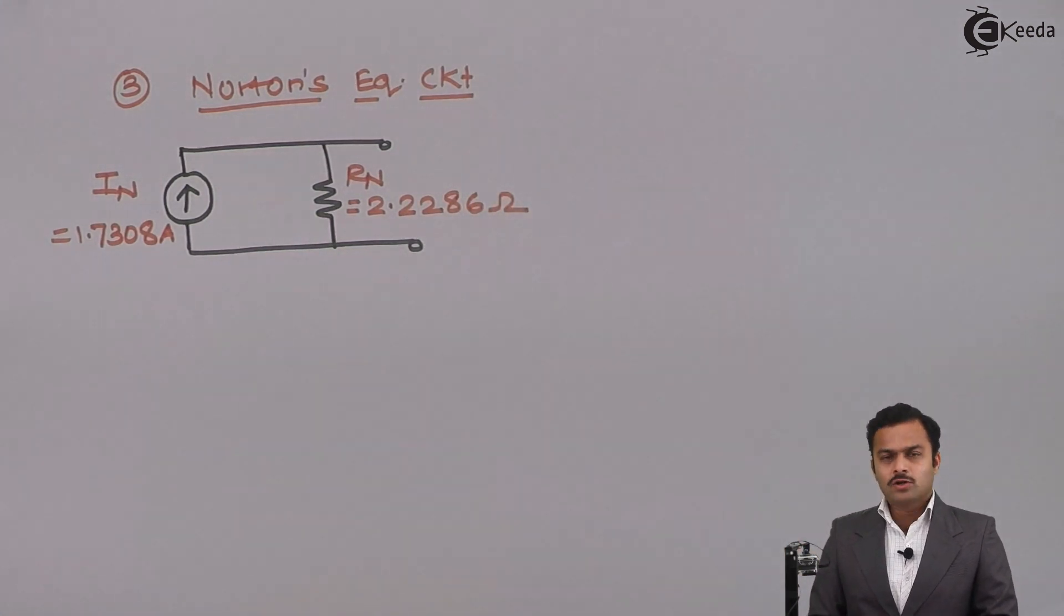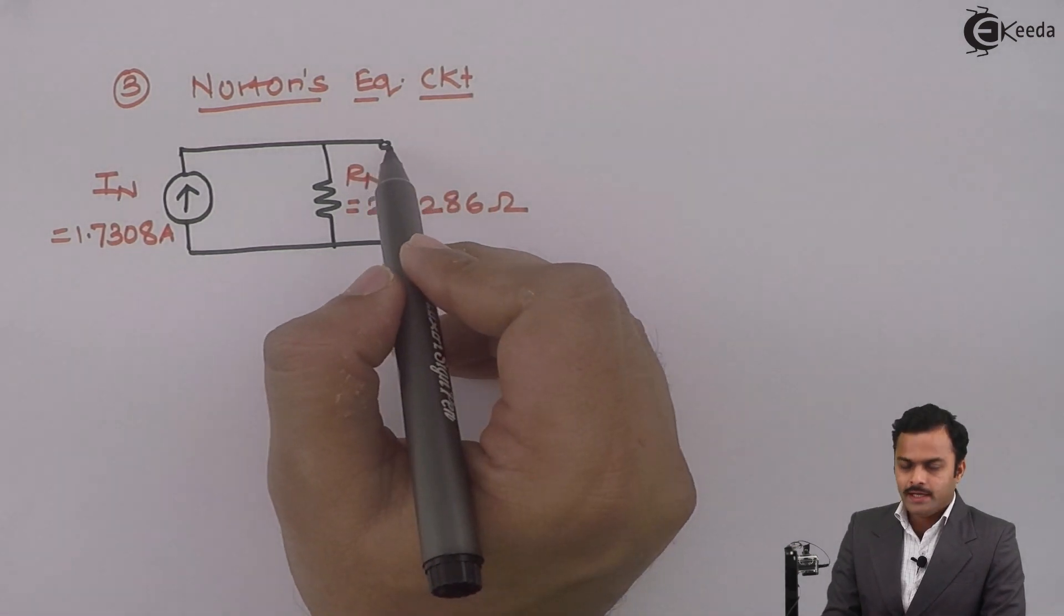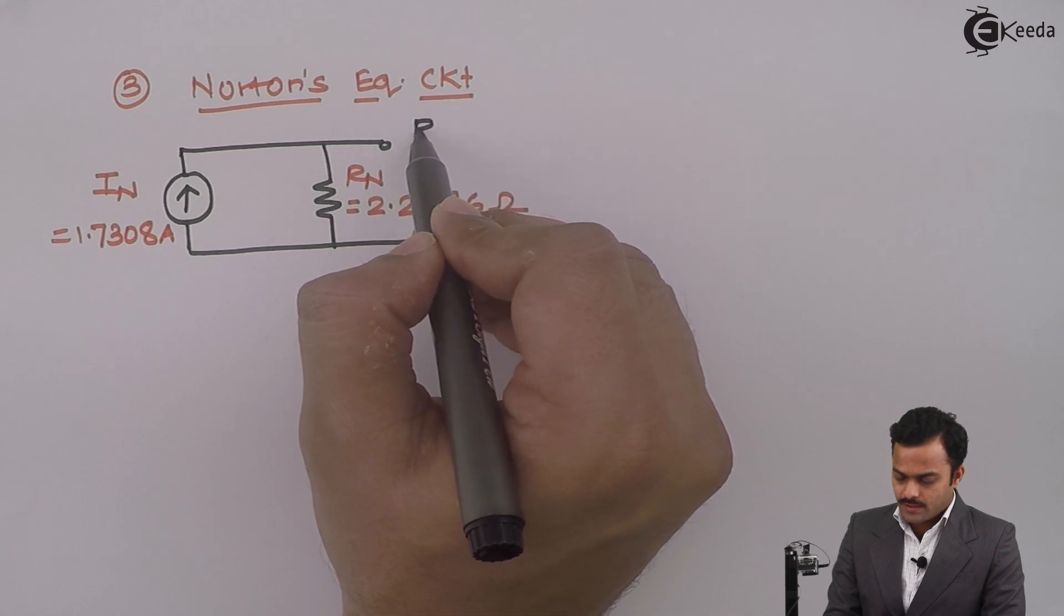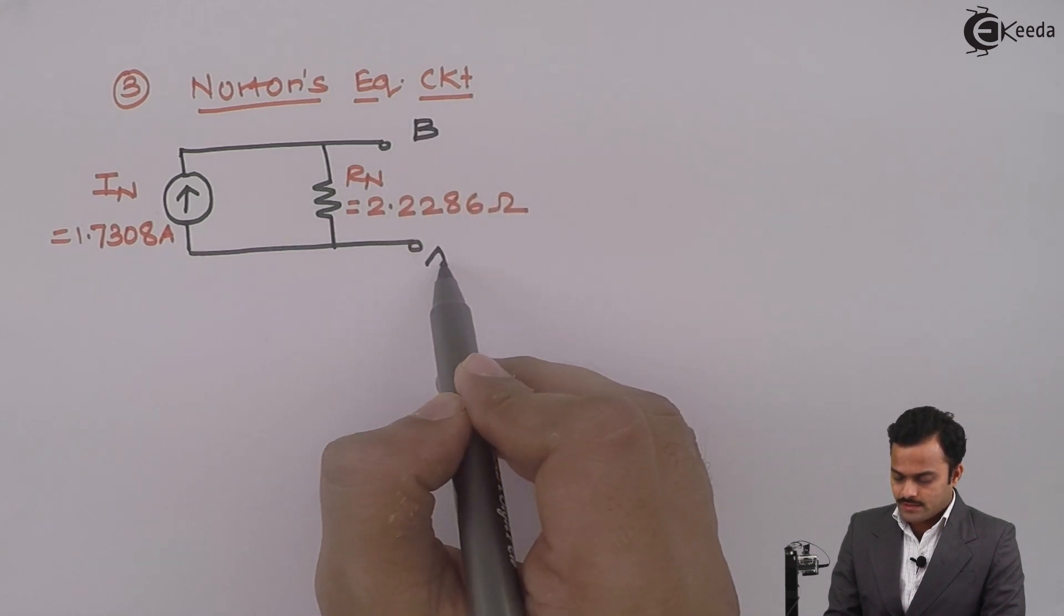Now, current we got is from B to A. So in order to get a current from B to A, here I should mark this point as B and this point as A.